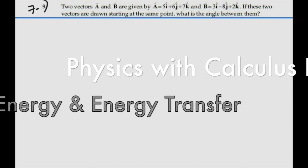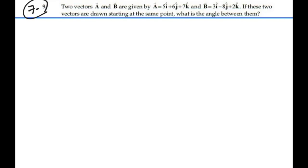Here's problem 7-9. Two vectors A and B are given by A equal to 5i plus 6j plus 7k, and B equal to 3i minus 8j plus 2k. If these two vectors are drawn starting from the same point, what is the angle between them?